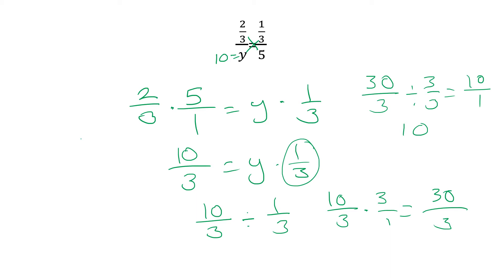If you got it right, go ahead and go one step further — write everything out and double-check your work. Plug in one-third times 10, set that equal to two-thirds times 5, and see if you are still correct.